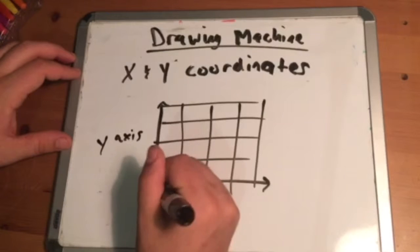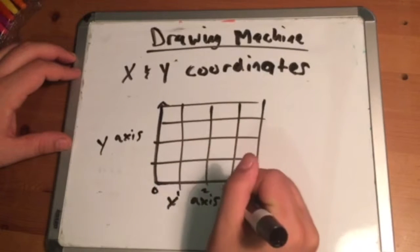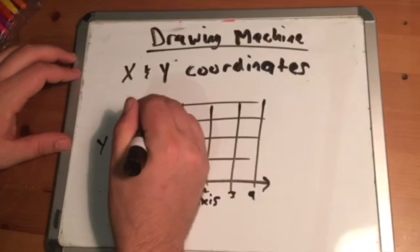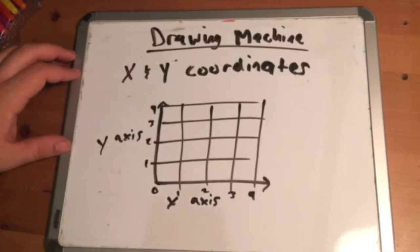Generally, moving to the right will cause a positive change in X, moving to the left will cause a negative change in X, moving up will cause a positive change in Y, and moving down will cause a negative change in Y.